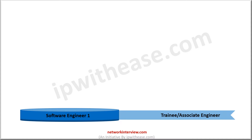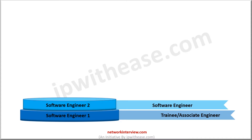The next level is called Software Engineer 2. It is a level from where you become a part of the organization. It is a typical software development position that requires at least one year of work experience. The average annual salary is $165,000 to $175,000.